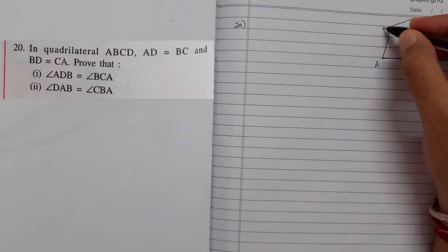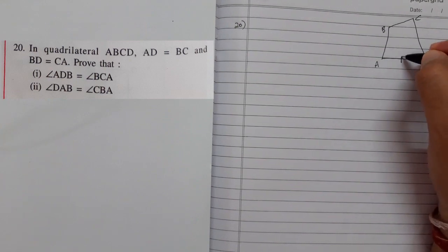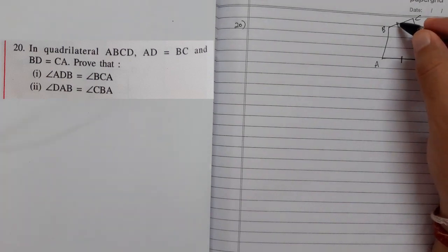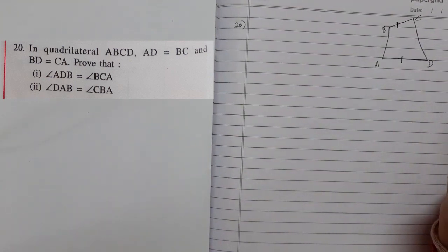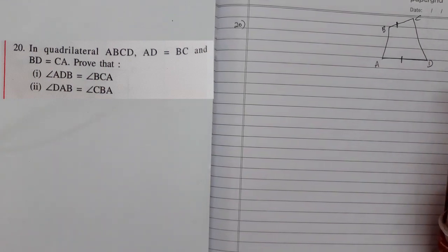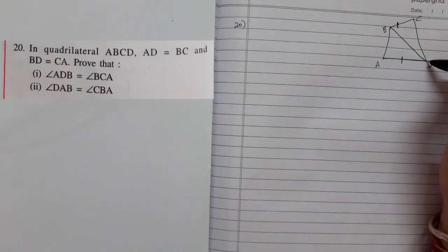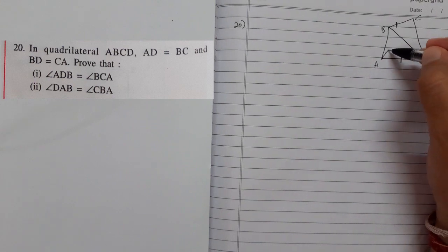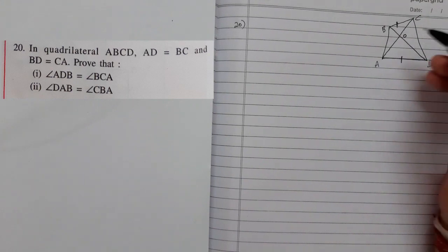They are saying that AD equals BC. It's not looking like that in my figure because I was just drawing the quadrilateral. Now if I draw differently, let's assume they are equal. And they are saying BD equals CA, so let's see if they are meeting at this point O.